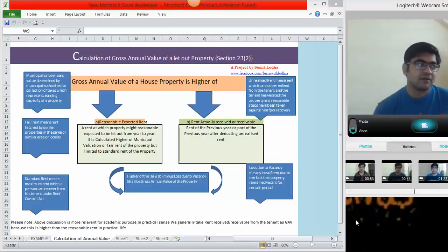If any property just opposite to my building is getting 30,000 rent then it can be considered as fair rent for my property also. It should not be checked with one property, it should be checked with similar properties, some few properties you can take and get the average or get the fair rent.